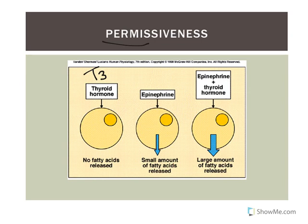That is referred to as a permissive effect. Another example of permissiveness is in the uterus: prior exposure to estrogen induces the formation of progesterone receptors. So in the later part of the female reproductive cycle, you need the effects of progesterone, but that requires the prior exposure to estrogen that occurs early in the cycle.